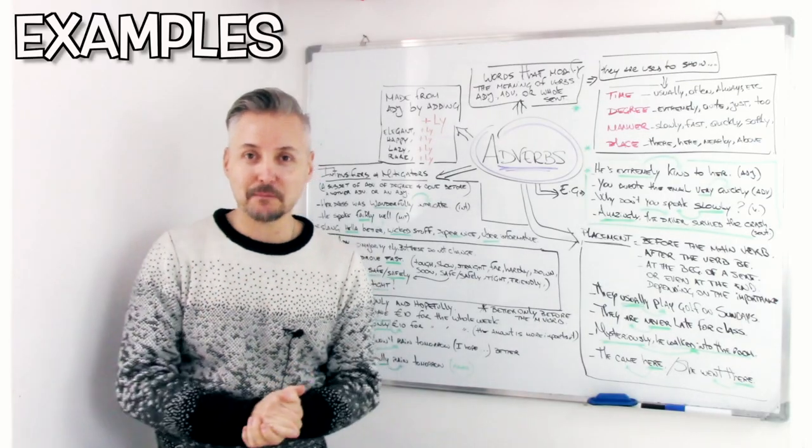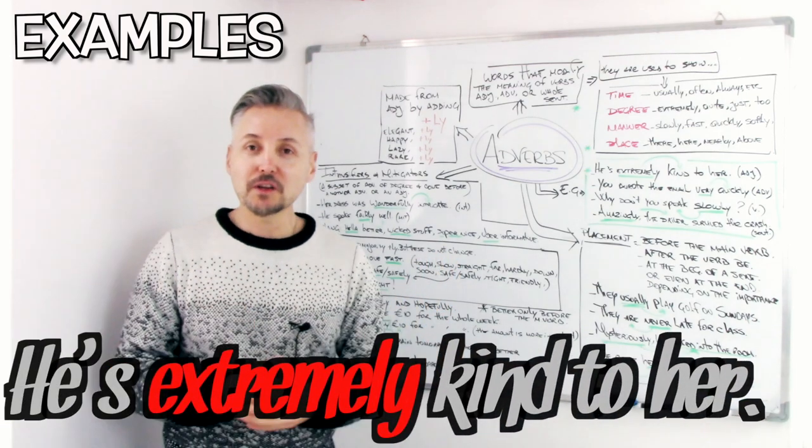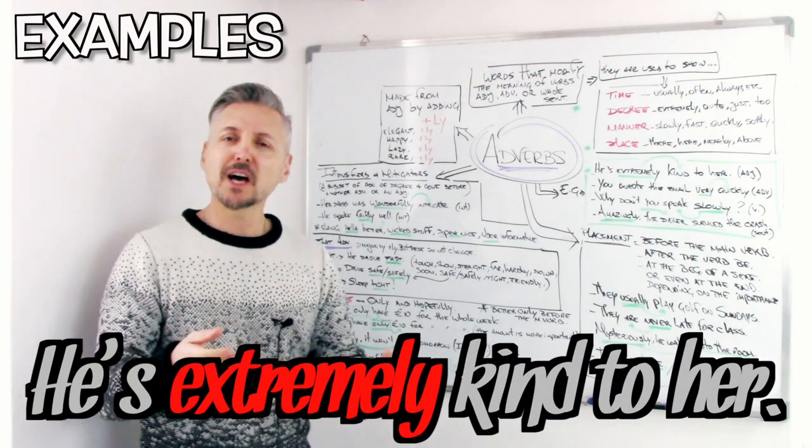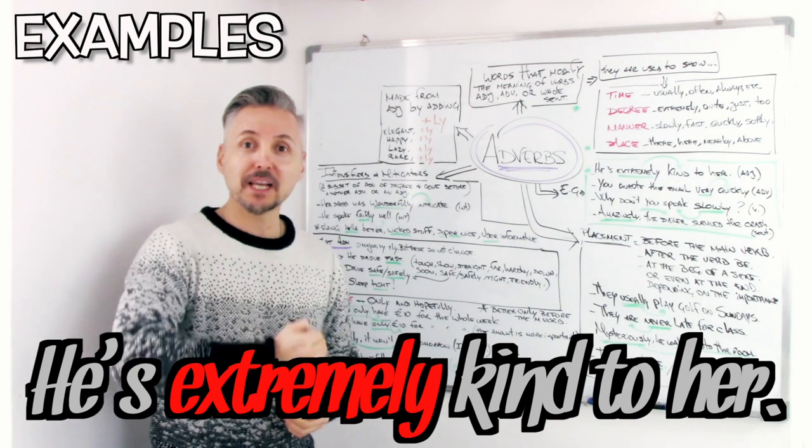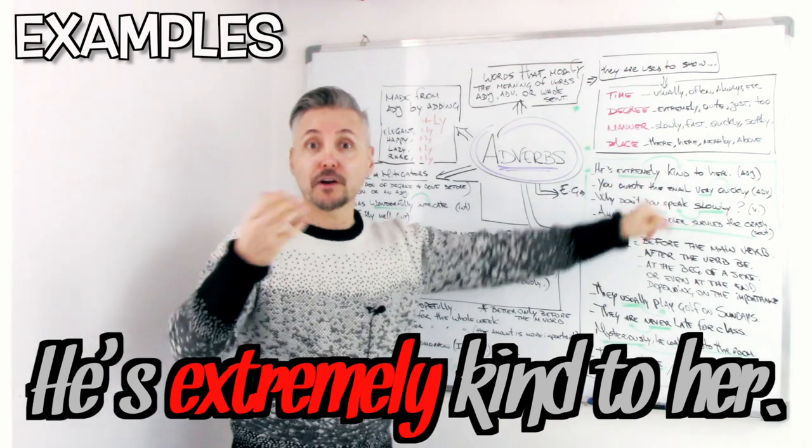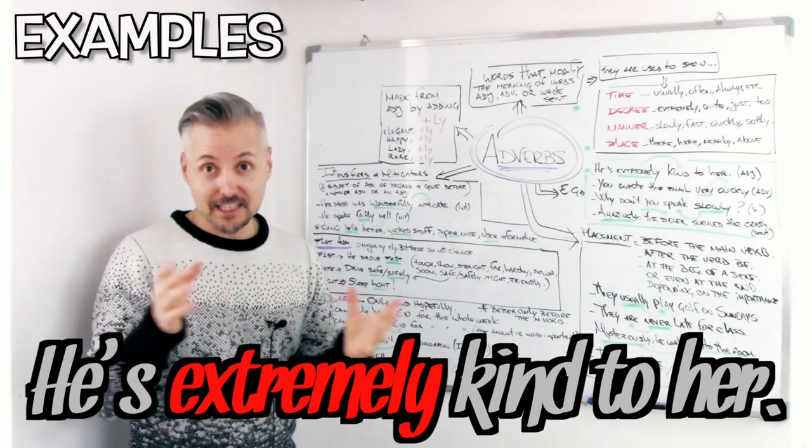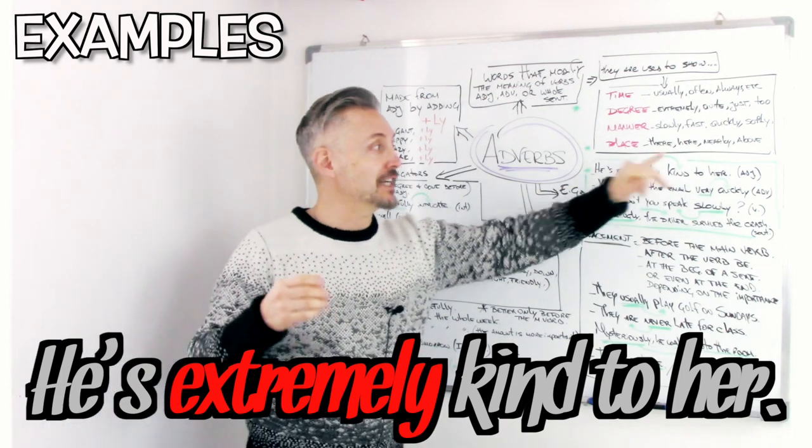Let's take a look at my examples then. He's extremely kind to her. Kind is, yes, an adjective. Extremely kind. It goes before the adjective in this case, right? He's extremely kind to her.